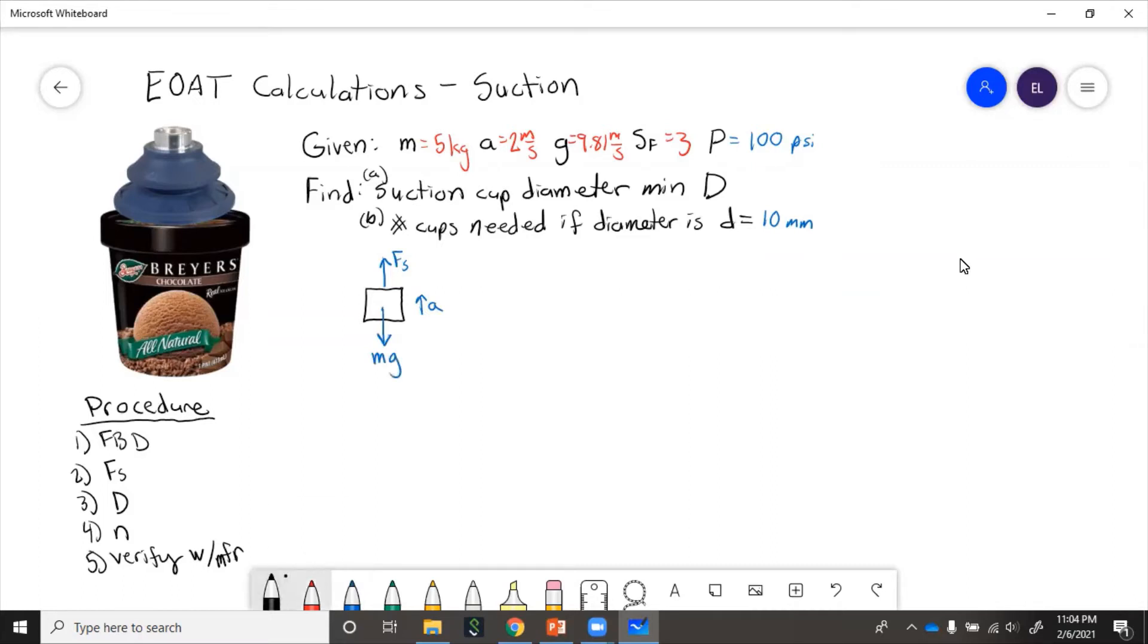Then we sum up, mass times acceleration. So that would be suction force minus weight. So suction force equals m times a plus g. So if we put numbers into there, we'll have 5 times 2 plus 9.81 equals 59 newtons.